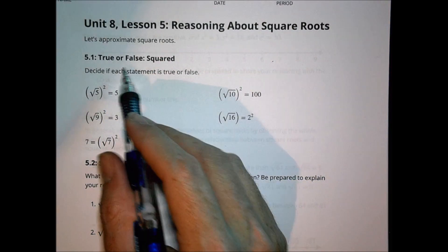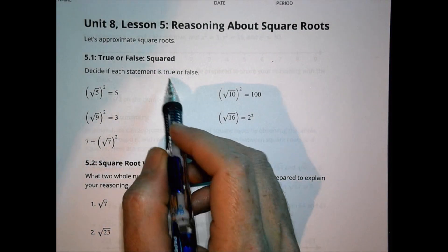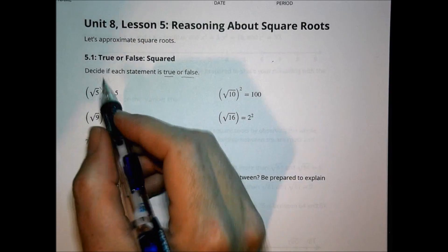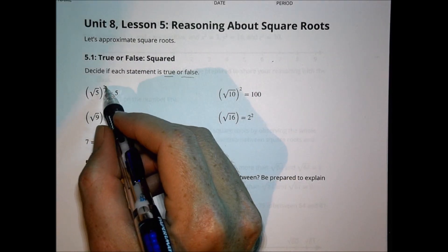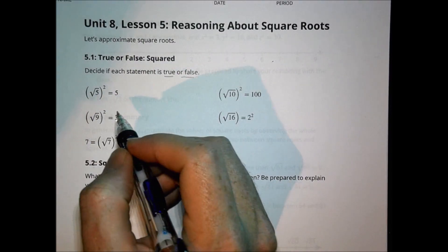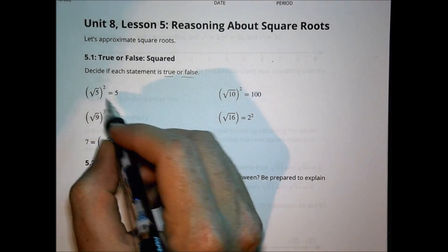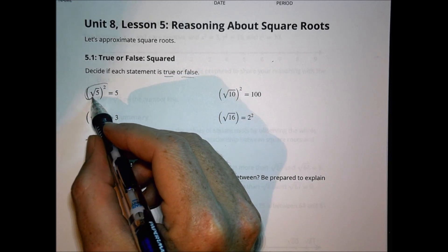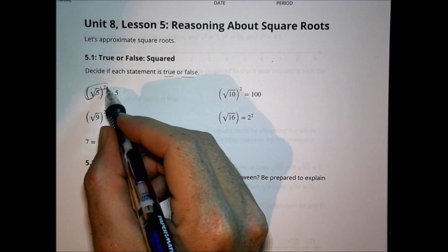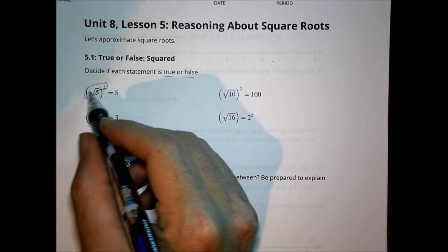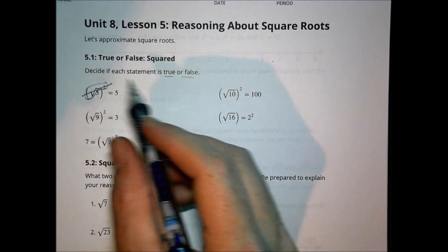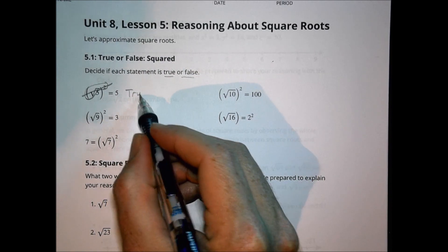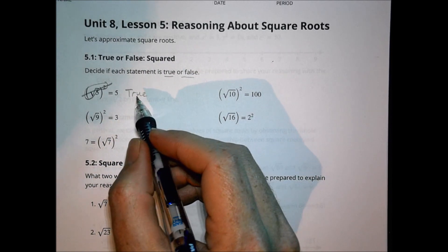So first of all, true or false — a side view statement is true or false. We have the square root of 5 squared equals 5. This is going to be true, because when you square a square root they cancel out, so 5 equals 5. This would be a true statement.